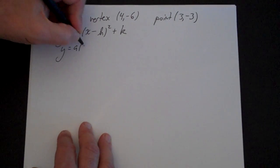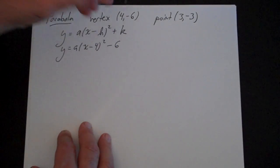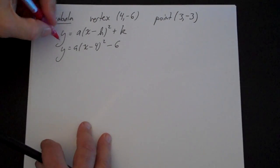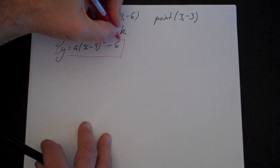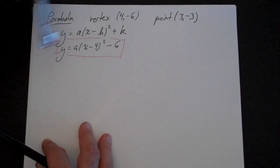So that's y = a(x - 4)² - 6. And I like to put a box around this because you are almost done when you are here. If you look at this problem, you have everything except you need to know what a is.